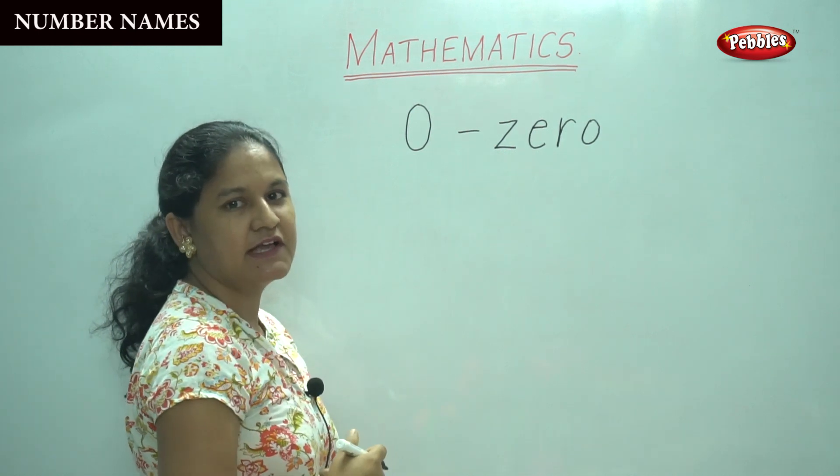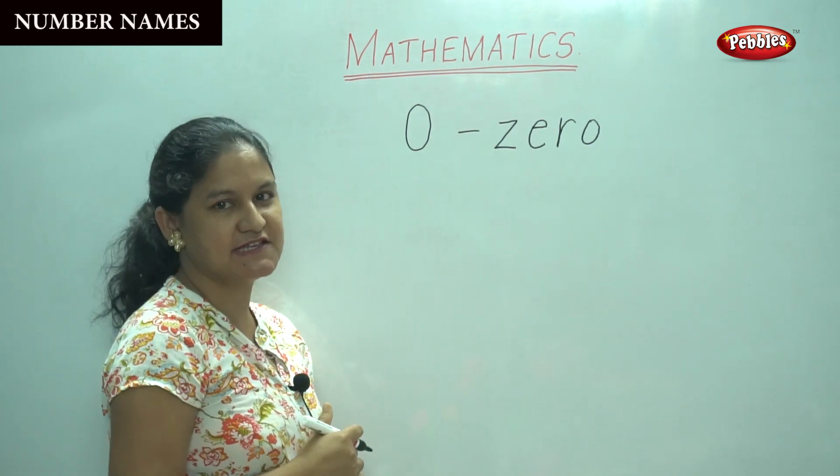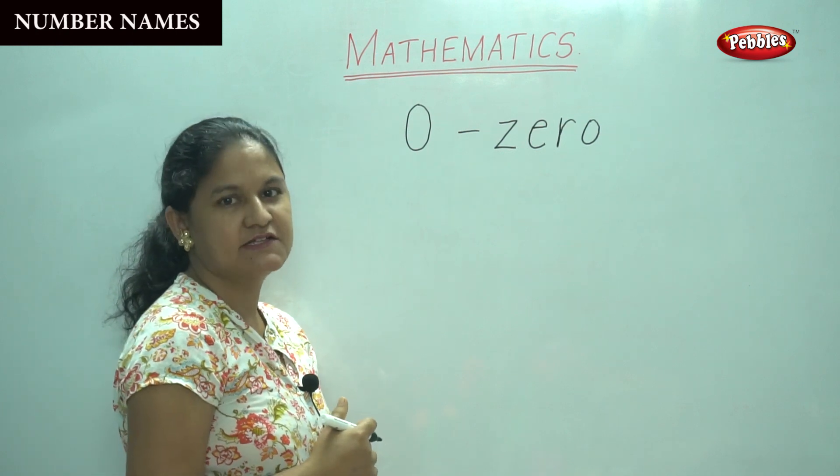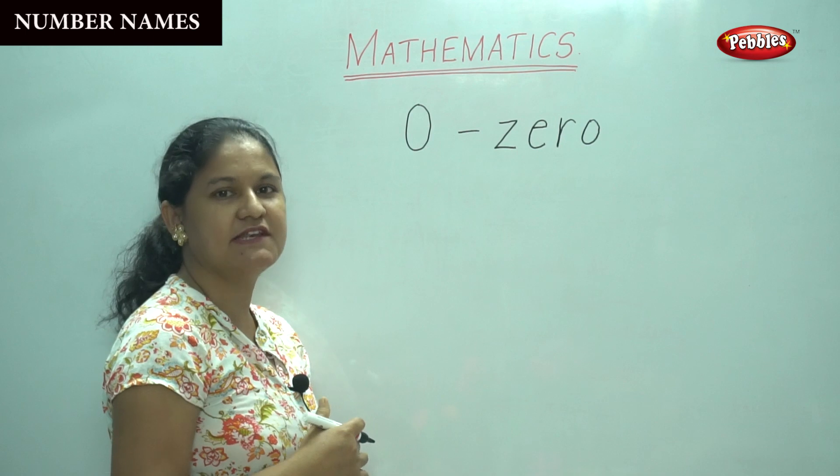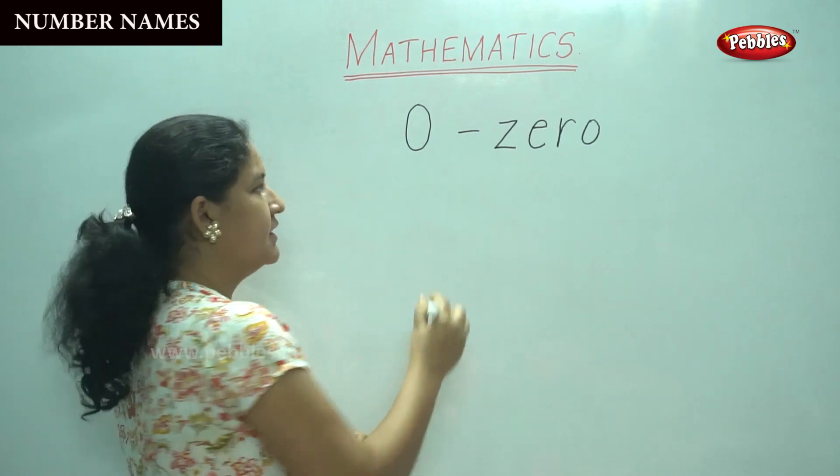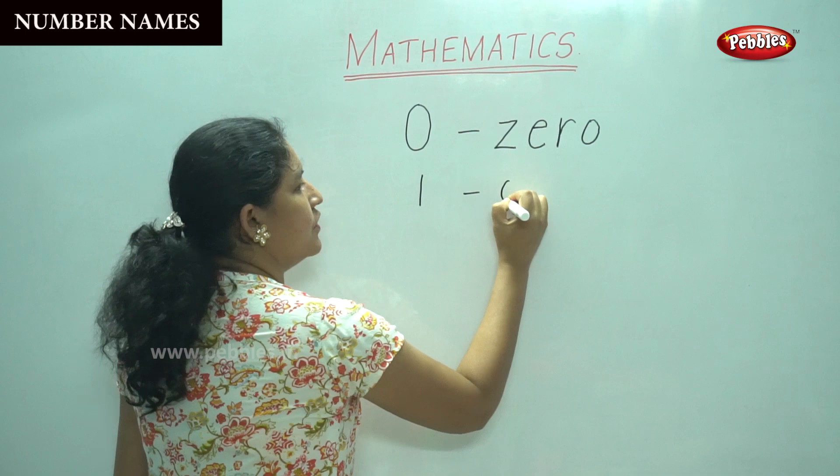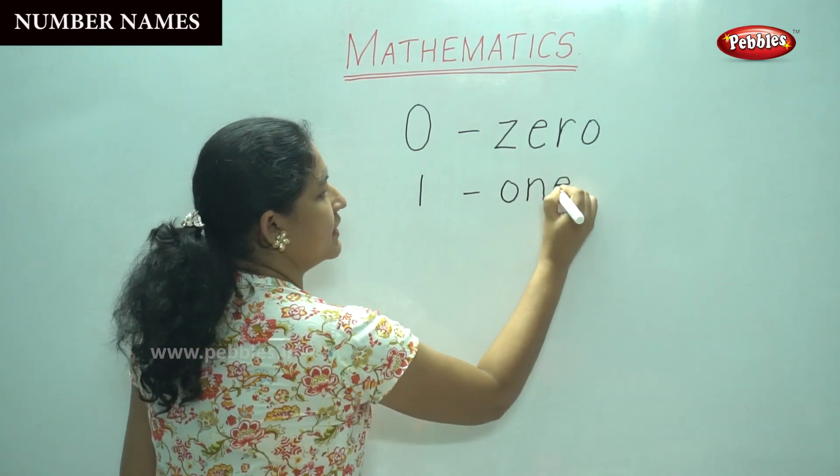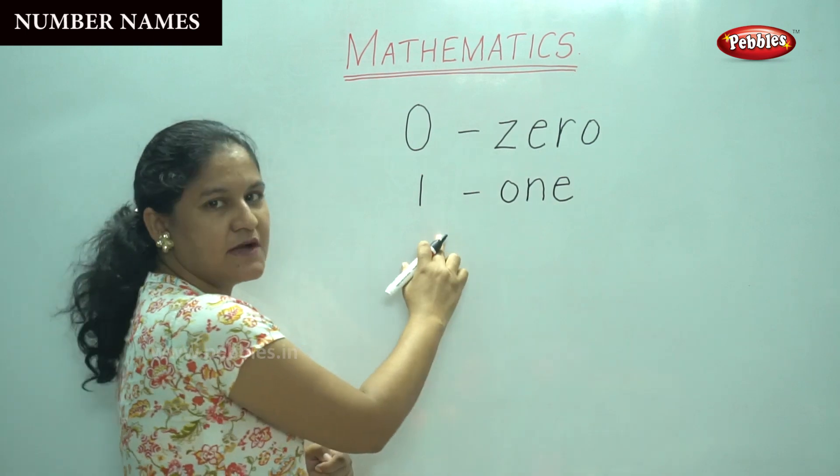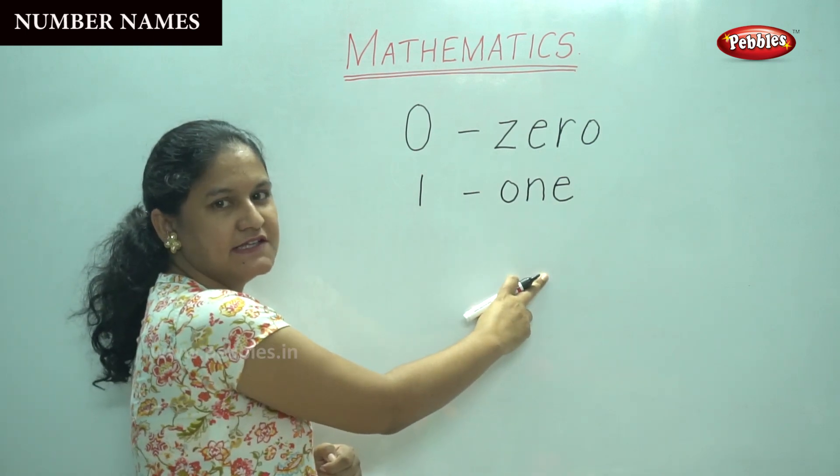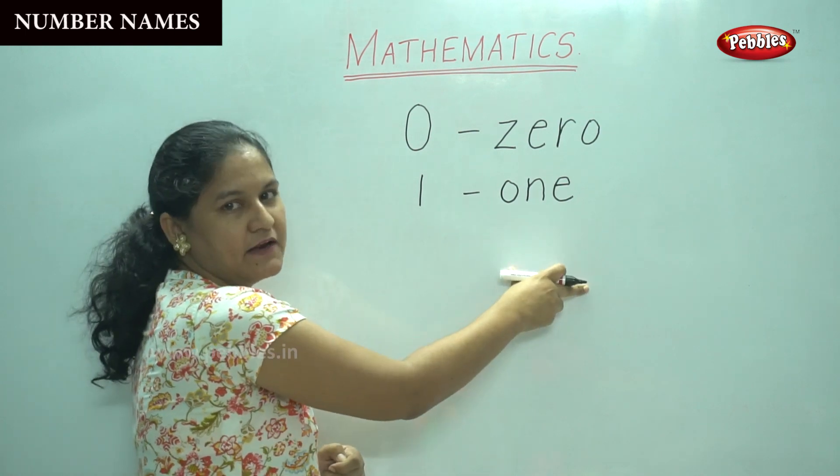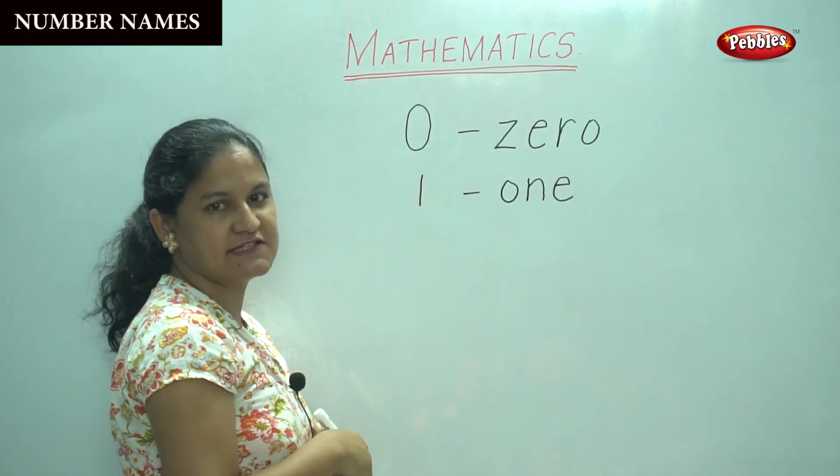The next number. Can anyone tell me what will be the next number? Yes, it is number 1. So shall we see the spelling or the number name for number 1: O-N-E, 1. So the number name for number 1 is O-N-E, 1.